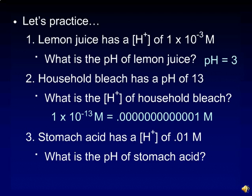Stomach acid has a hydrogen ion concentration of 0.01 molar. To calculate the pH, we need to first convert to scientific notation, 1 times 10 to the negative 2 molar, or a pH of 2.